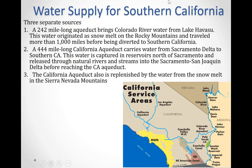A 242-mile-long aqueduct has been built to bring water from Lake Havasu, which stores water from the Sacramento River area, into Southern California. Another 444-mile-long aqueduct, known as the California Aqueduct, has been built to bring water from the Sacramento Delta area into Southern California.